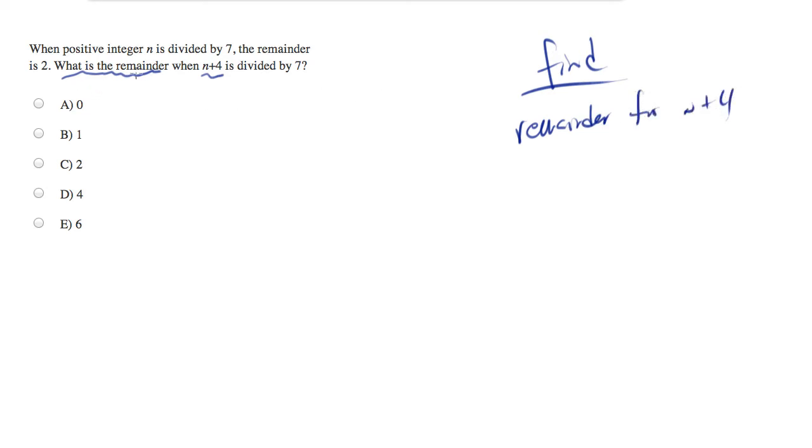Now, we haven't been told what n is, and it doesn't really matter what n is as long as it meets the criteria. When n is divided by 7, the remainder is 2. So we can pick anything we want. I'm going to pick 9. When you divide 9 by 7, you end up with a remainder of 2.